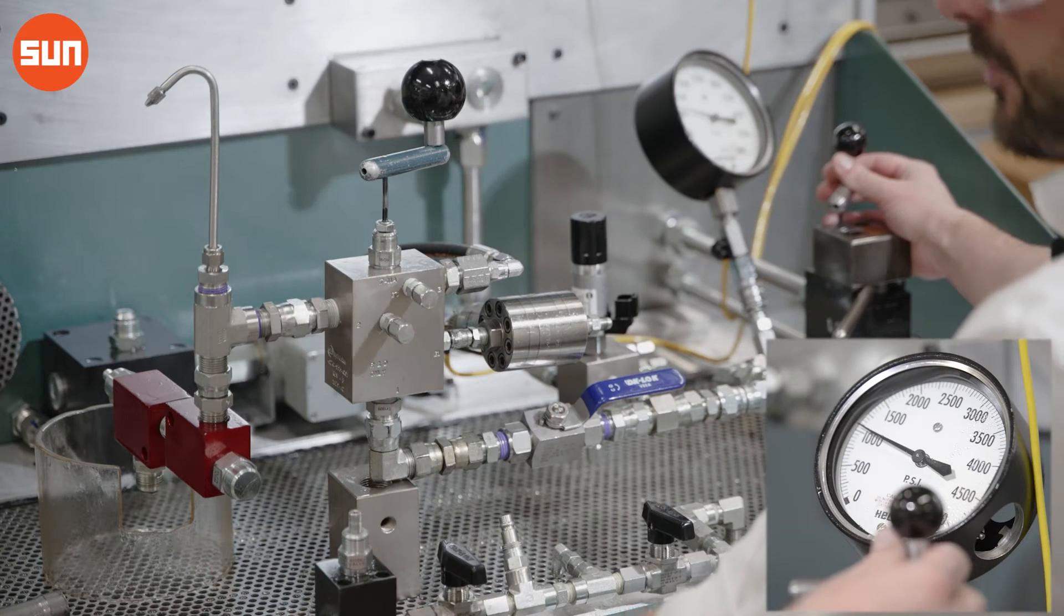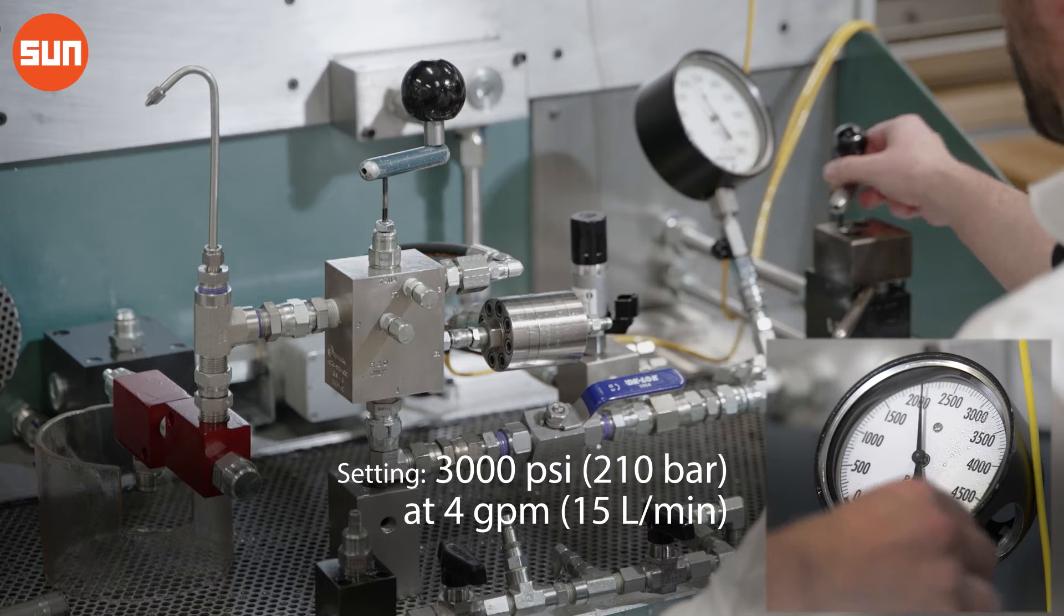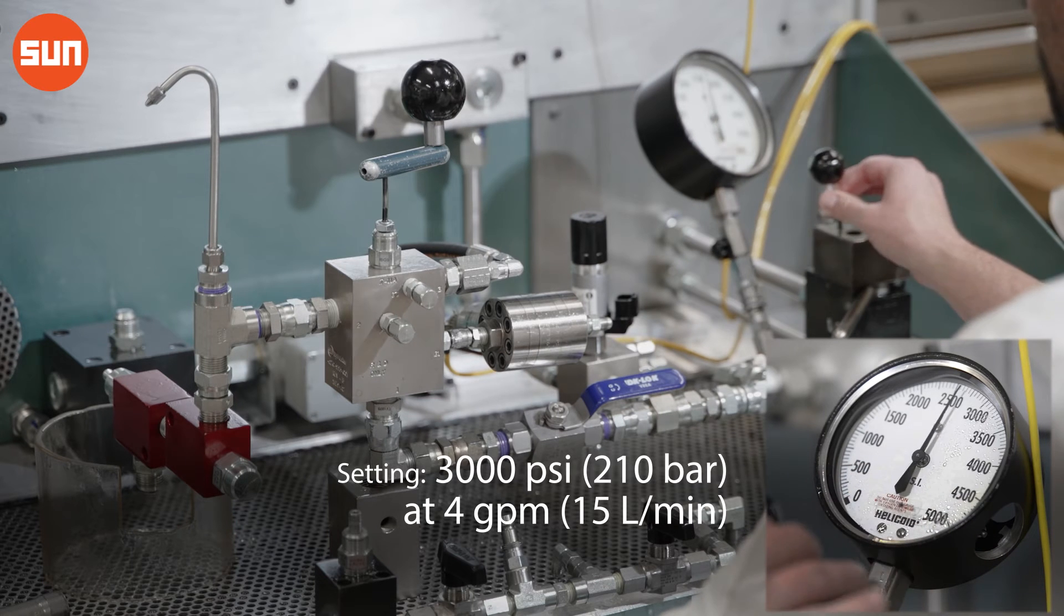Now we're going to increase our test stand pressure to our setting value. In this case it's going to be 3000 PSI.